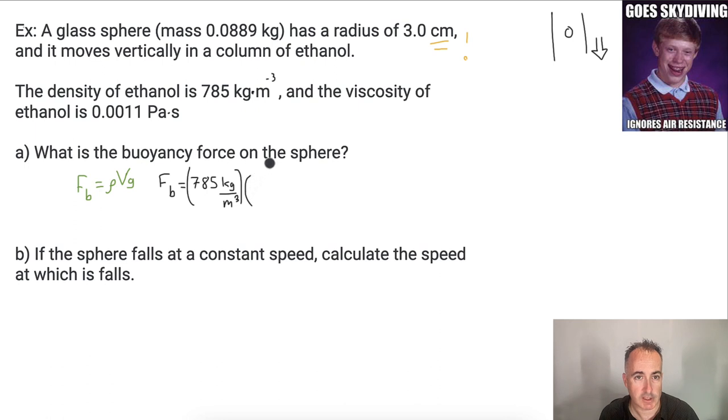But what's the volume? Well, we have to know the volume of the displaced fluid. Now, since it's fully in it, it's fully in this column, then we can use the entire volume. Now, remember what the volume of a sphere is. It's 4 thirds pi r cubed. And what's r? r is 0.03. Watch out, because that was really important here. Cubed.